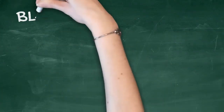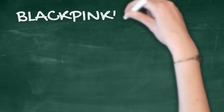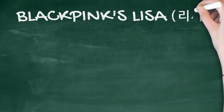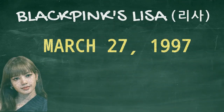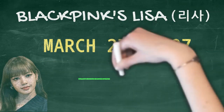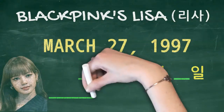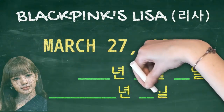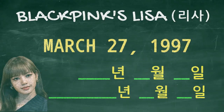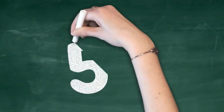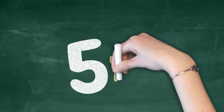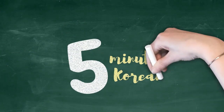So here's a challenge for you. Apply what you have learned to figure out Blackpink's Lisa's birthday: March 27, 1997. Once you've got it figured out, share it with us in the comments below. Thank you for watching!